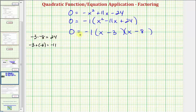And now this product equals zero when x - 3 = 0, or when x - 8 = 0. So solving here for x, we'd add three to both sides. So x = 3, or adding eight to both sides, x = 8.